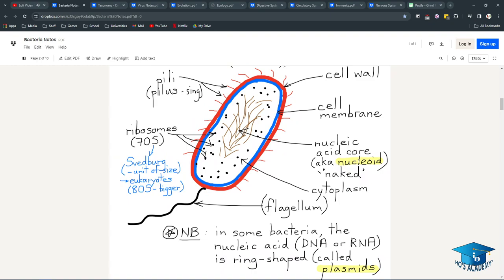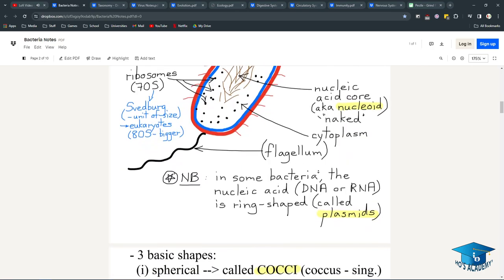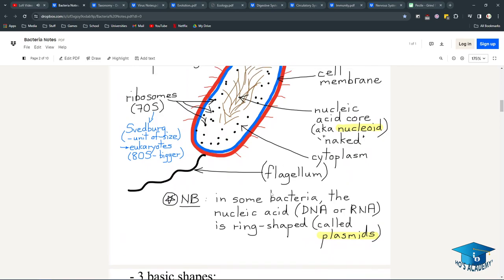The nucleic acid core, called the nucleoid region, is the naked-like area where DNA is stored, and they have a cytoplasm. In some bacteria, the nucleic acid is ring-shaped, called plasmids.